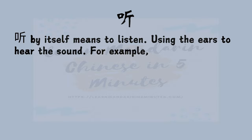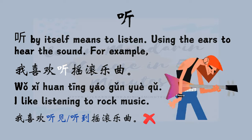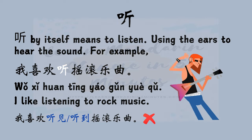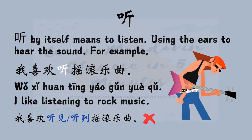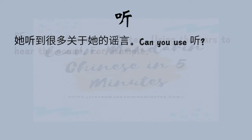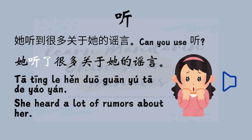听 by itself means to listen — using the ears to hear the sound. For example, 我喜欢听摇滚音乐 — I like listening to rock music. You cannot say 我喜欢听见 or 我听到摇滚音乐 in this context. What about the previous sentence 她听到很多关于她的谣言 — can you use 听 alone? Well, you can if you add 了: 她听了很多关于她的谣言.